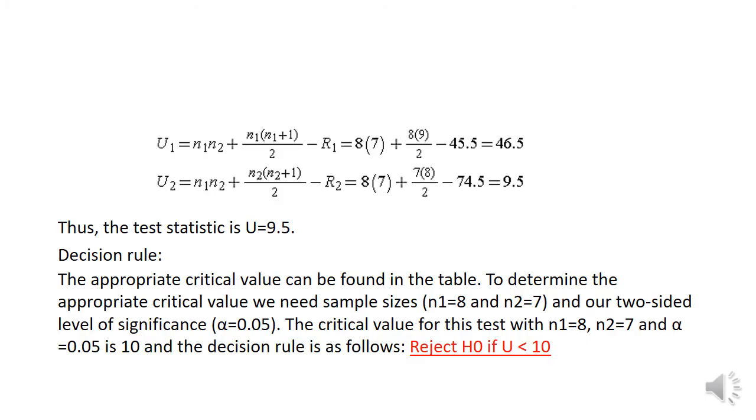Using the formula, U1 equals N1 times N2 plus N1 times (N1 plus 1) divided by 2 minus R1. We have 8 times 7 plus 8 times 9 over 2 minus 45.5 equals 46.5. For U2 equals N1 times N2 plus N2 times (N2 plus 1) divided by 2 minus R2, equals 8 times 7 plus 7 times 8 over 2 minus 74.5, that equals 9.5.